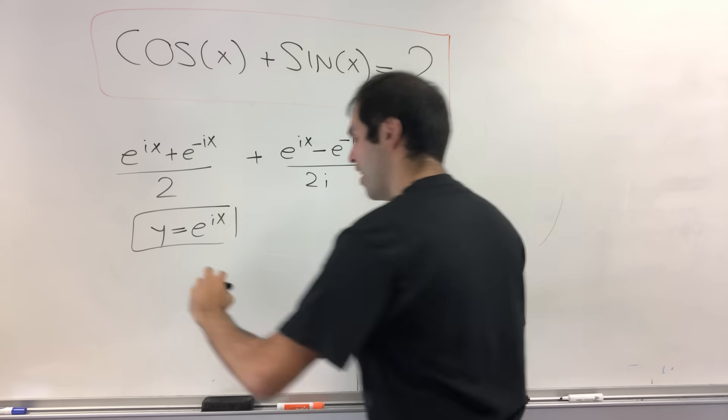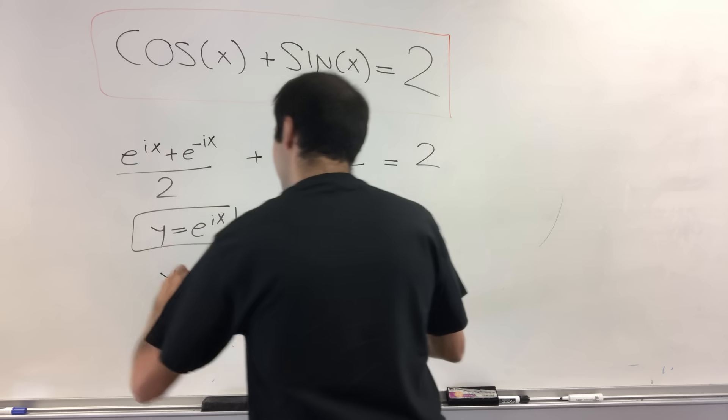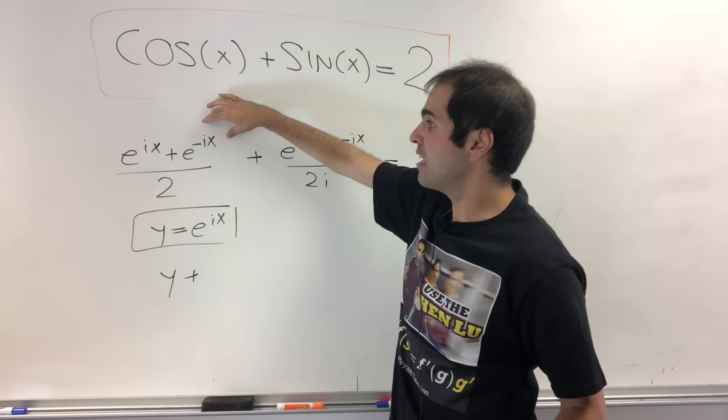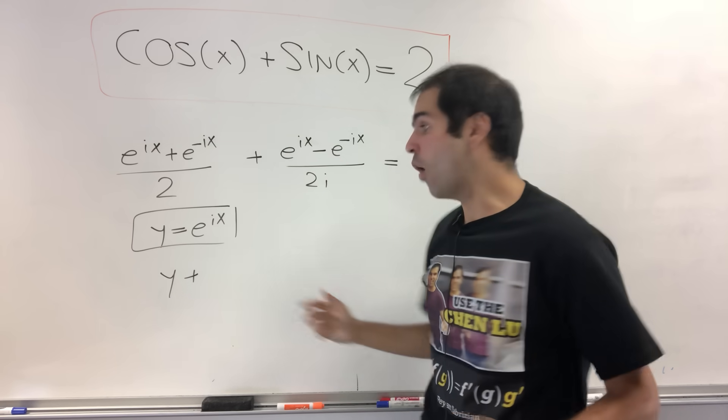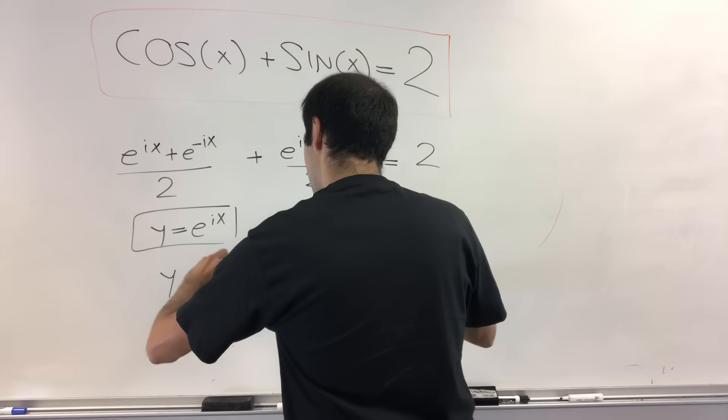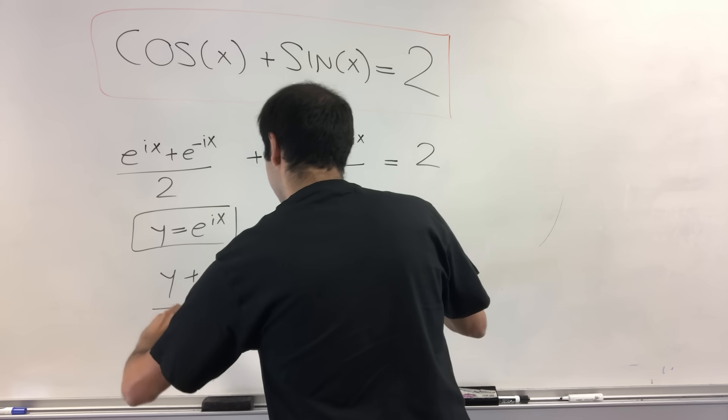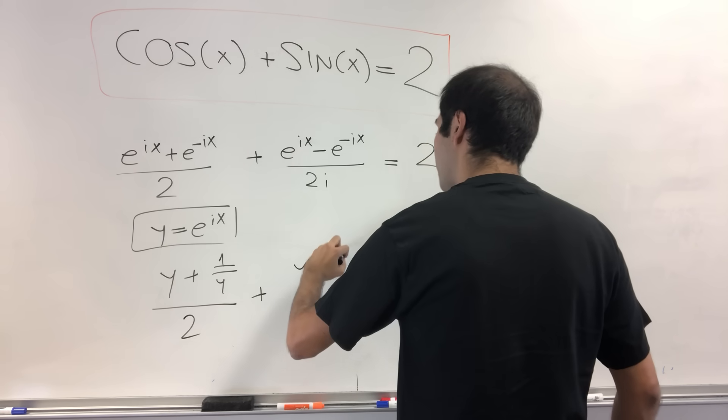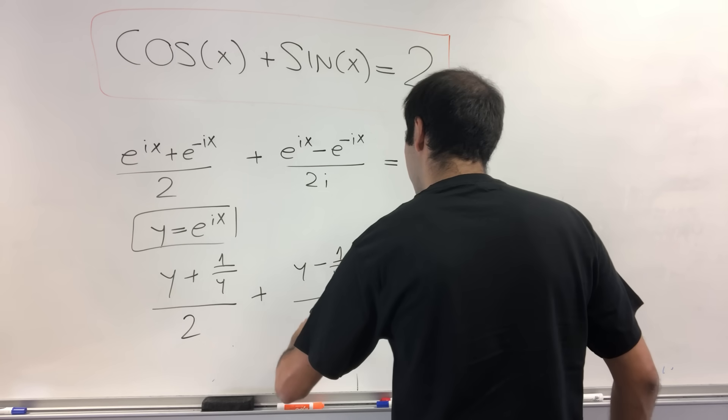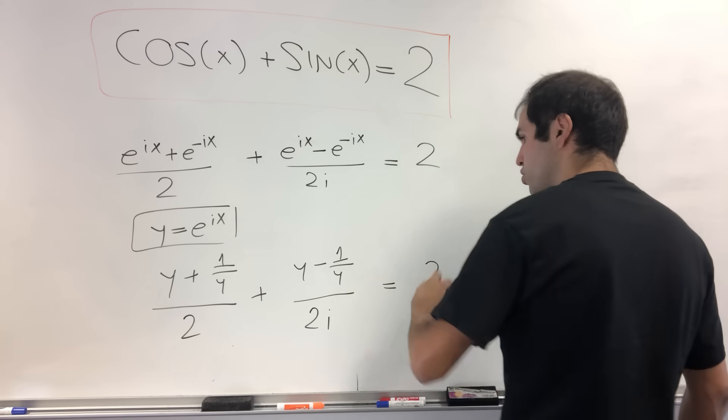e^(ix) is y. e^(-ix) is the same thing as 1 over e^(ix), so 1 over y. And then same thing here, y minus 1 over y over 2i equals 2.